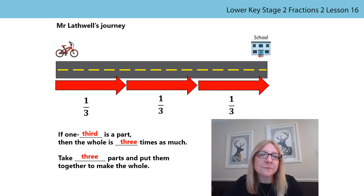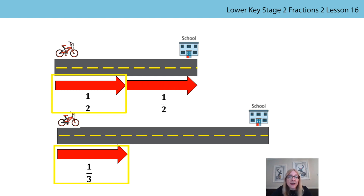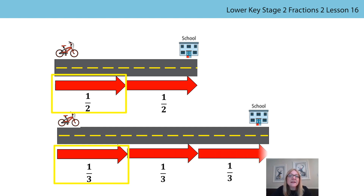Who does have the longest journey to school? This is one half of Miss O'Brien's journey, but this part is one third of Mr Lathwell's journey. Miss O'Brien's journey has been divided into two equal parts, and Mr Lathwell's journey has been divided into three equal parts. We can see that the whole of Mr Lathwell's journey is longer.